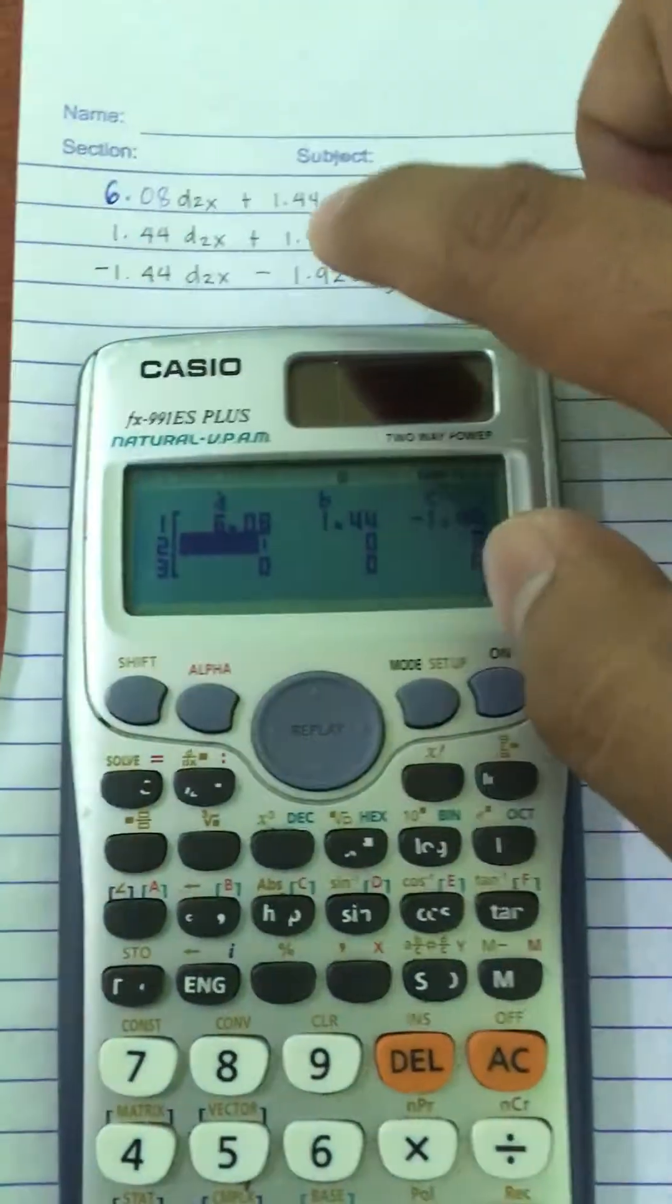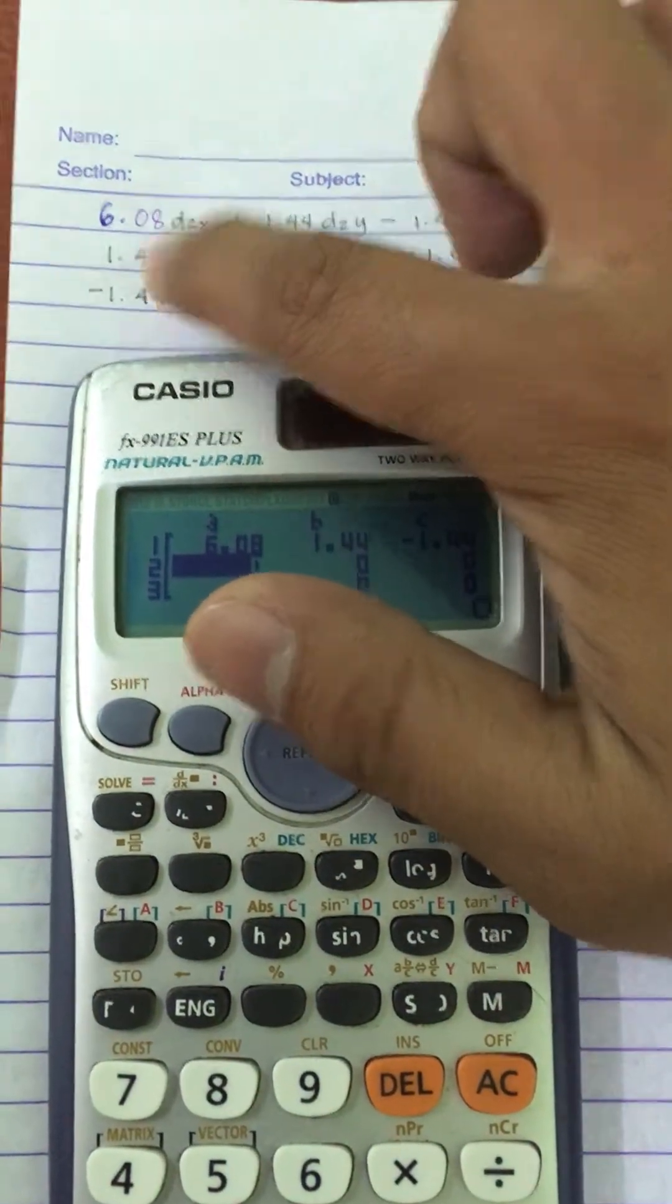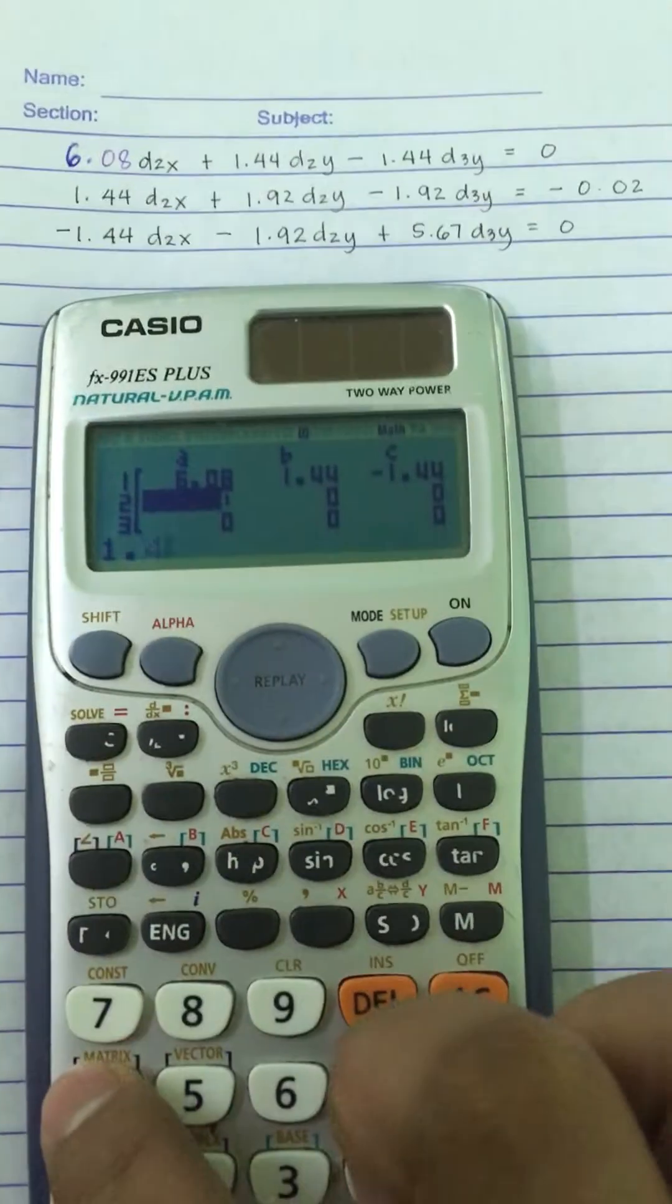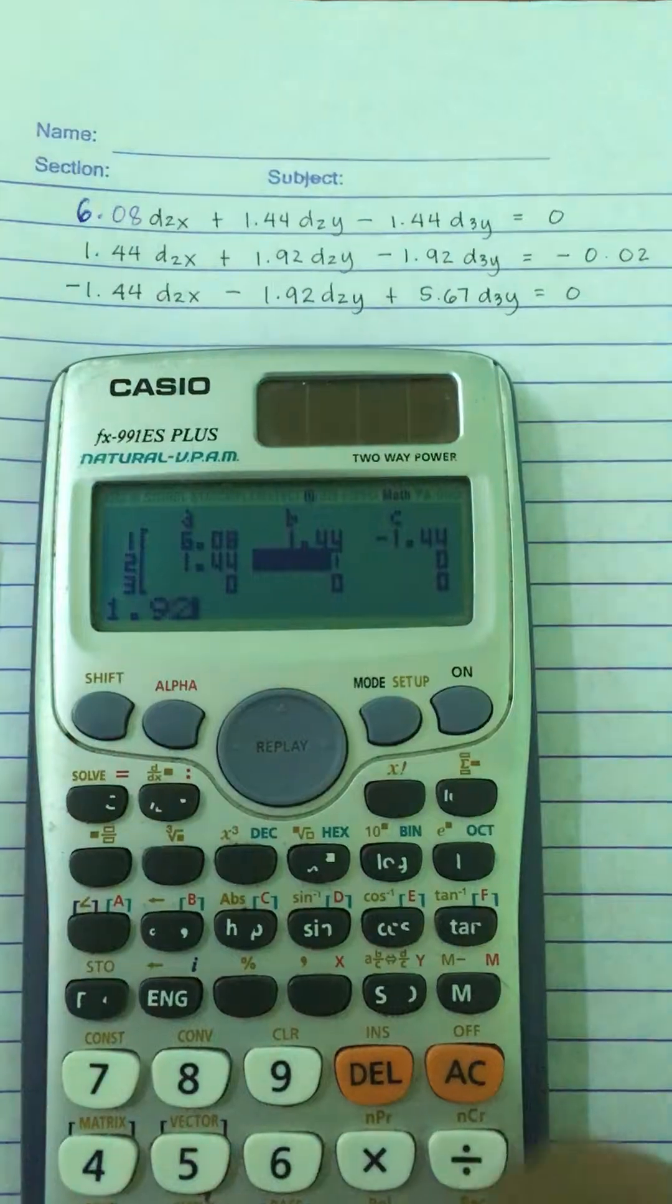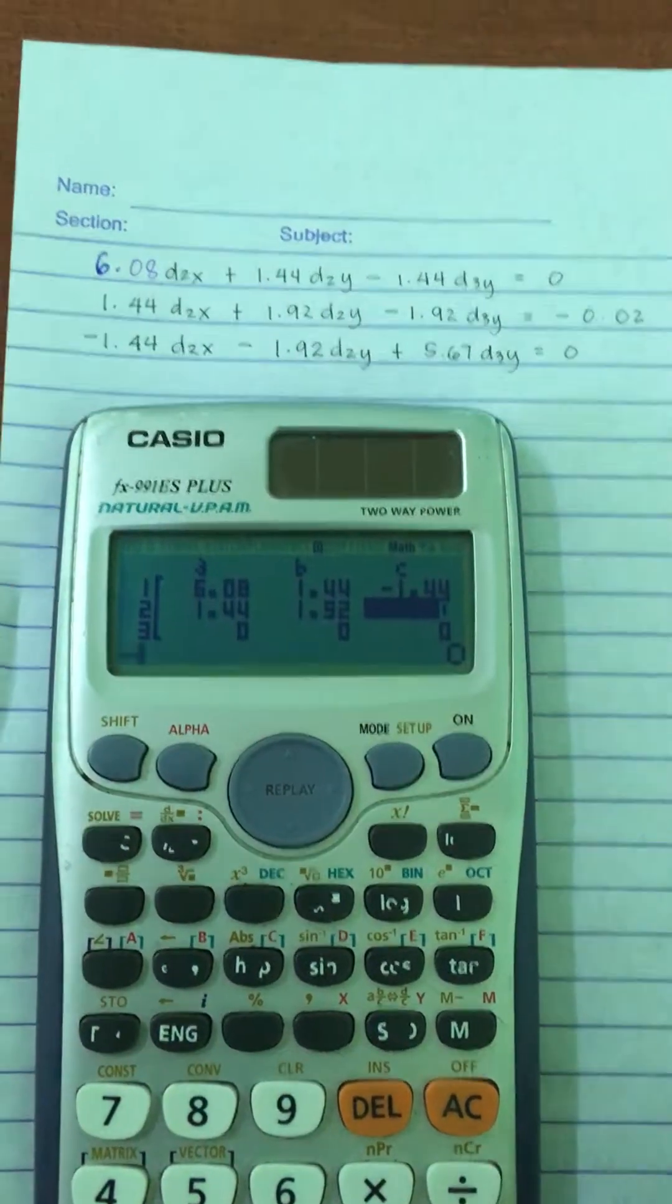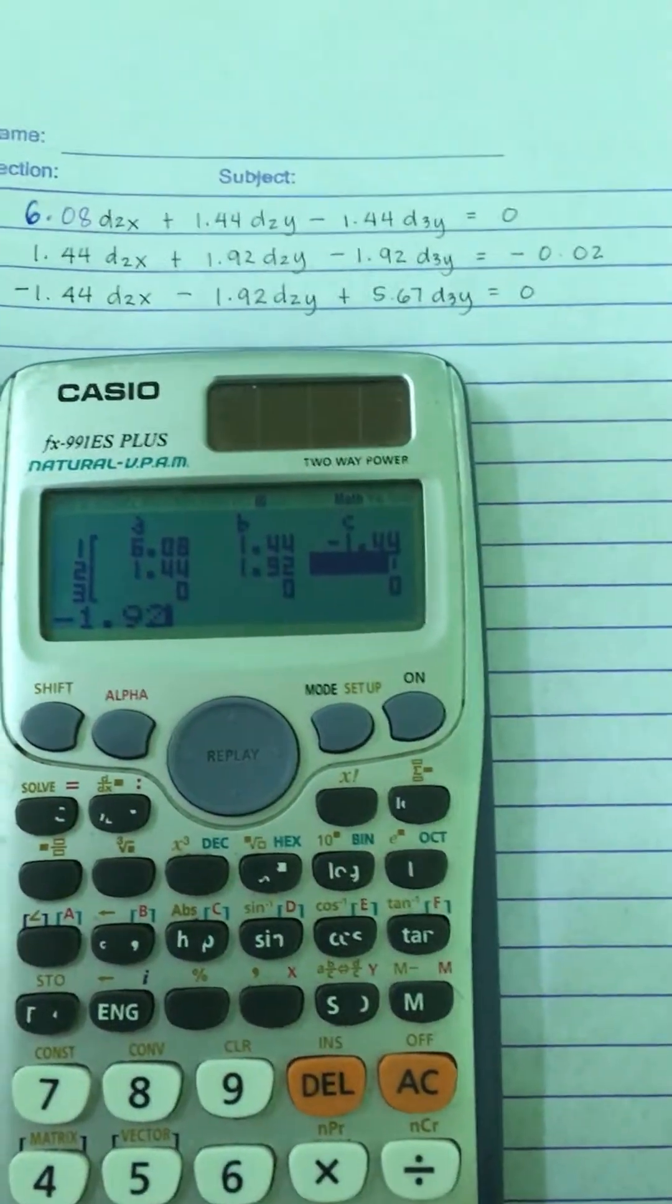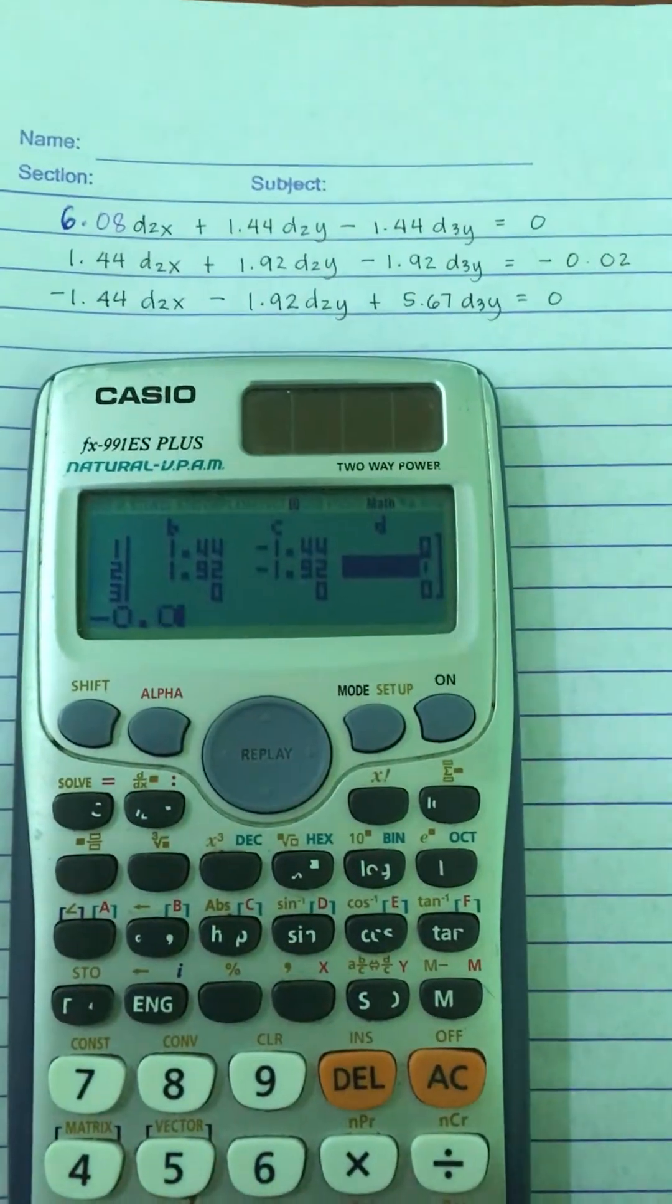And then we go to the next equation. We have here 1.44. Just input the constants, and then next one is 1.92, then next one is negative 1.92, the next one is negative 0.02.